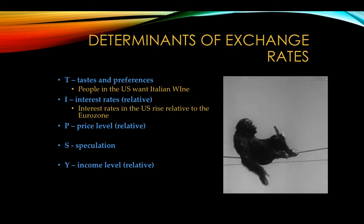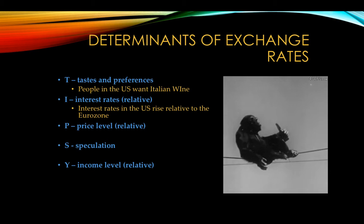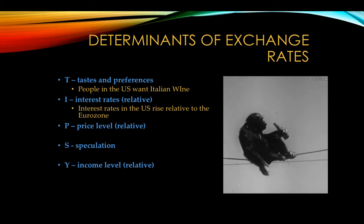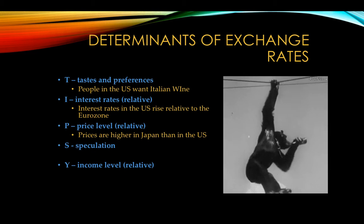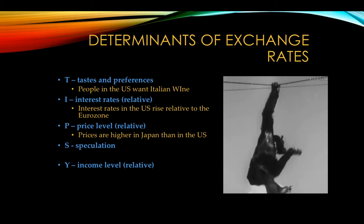Interest rates: if interest rates rise in the United States relative to the Eurozone — say the interest rate in Europe is 3% and in the United States it's 6% — people are going to want to put their money in the United States to get a higher return on their investment. So Europeans are going to demand our dollar and supply their euro. For relative price levels: if prices are higher in Japan, Japanese people are going to want to shift and buy our products because ours are cheaper. They demand our currency.